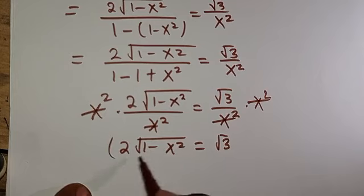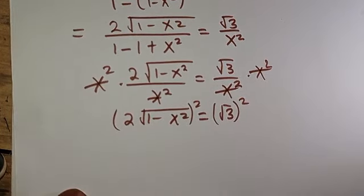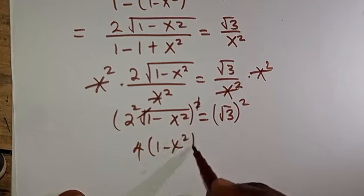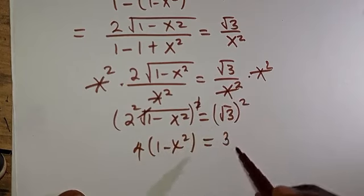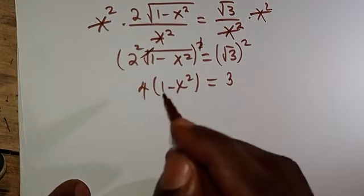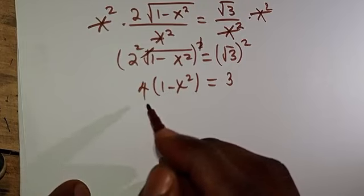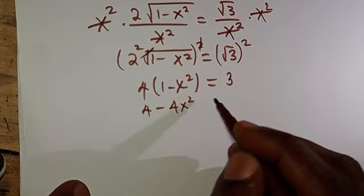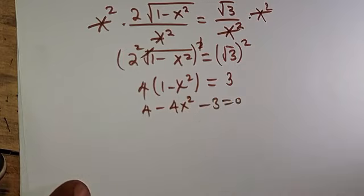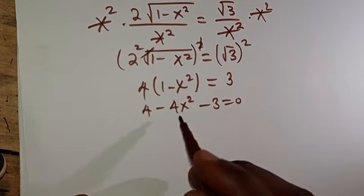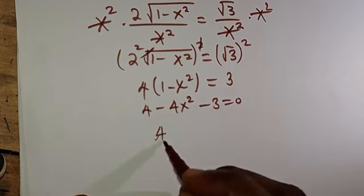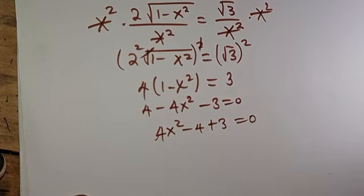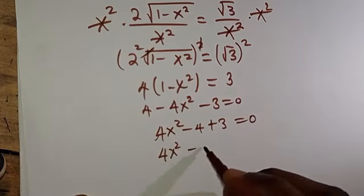We have a square root, so we square both sides. Squaring the left side cancels the square root, and we must square the 2 as well, giving 4(1−x²). Squaring √3 gives 3, so: 4(1−x²) = 3. Opening the bracket: 4 minus 4x² = 3. Transposing, we get 4x² minus 1 equals 0.